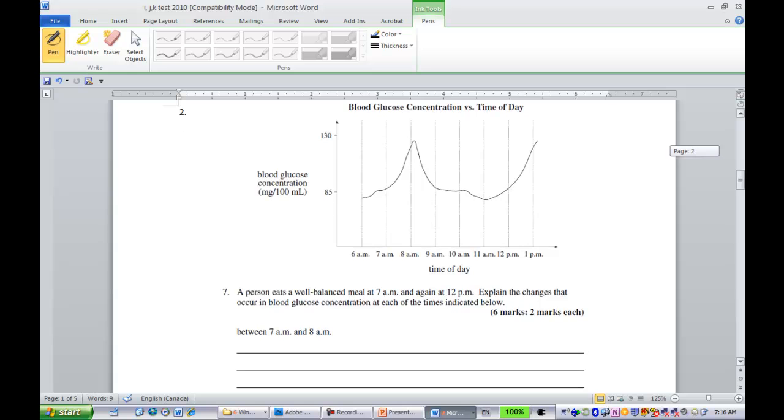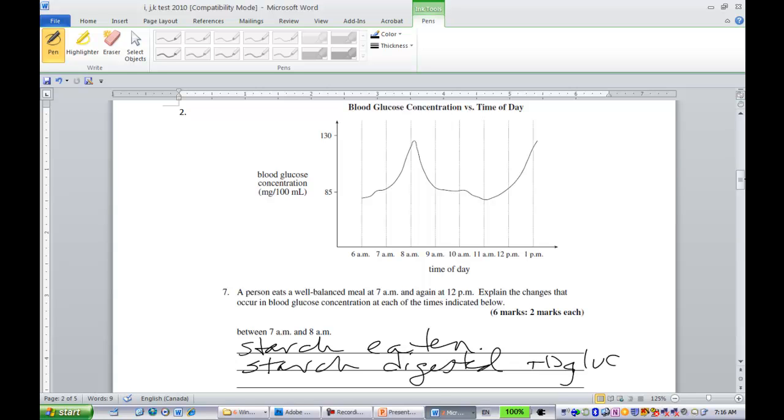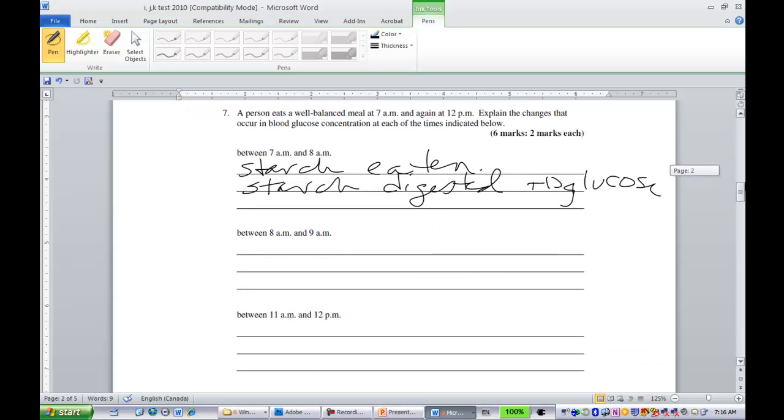So, this blood glucose question, we saw it, all of us, on our practice test, so most of us got it. We had to say that starch was taken, eaten, and then the starch was digested, and glucose was released into the bloodstream, and that's what caused the blood sugar to go up after eating. Most of us got there.